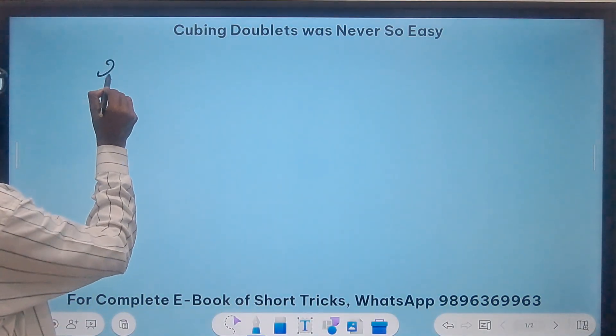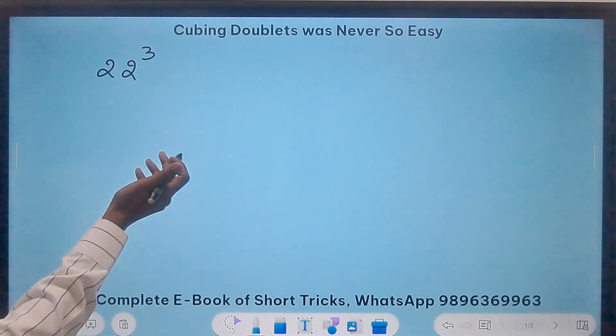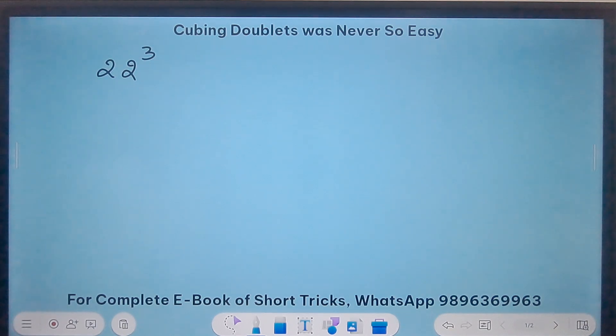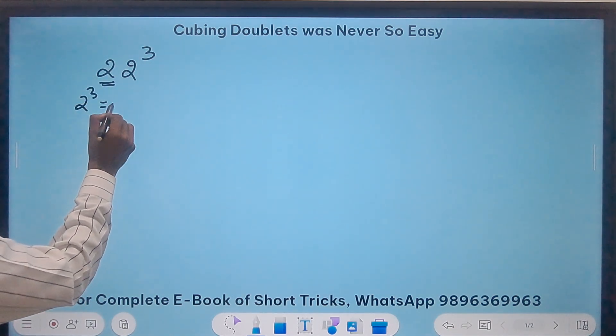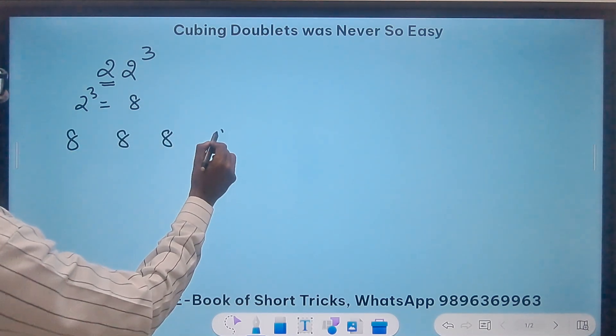Suppose I take 22 cube. The first doublets. 11 cube is pretty easy. So I will start with 22 cube. I know that 2 cube is 8, right? 2 cube is 8. So what will I do? I will write 8 four times. Like this.